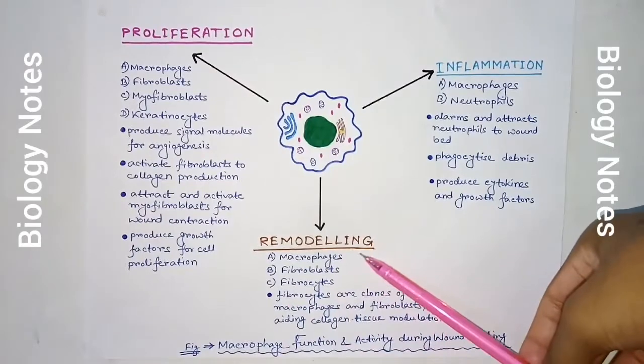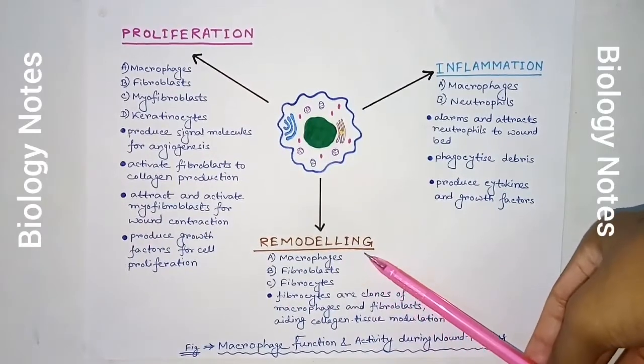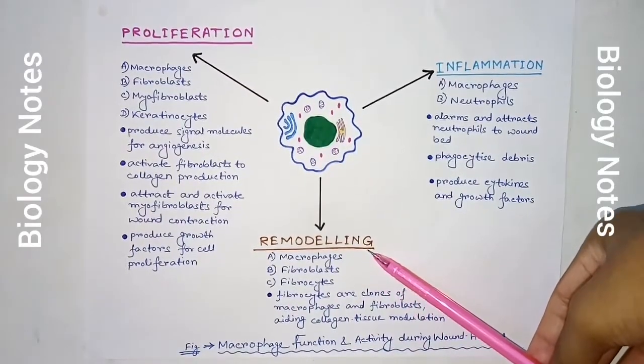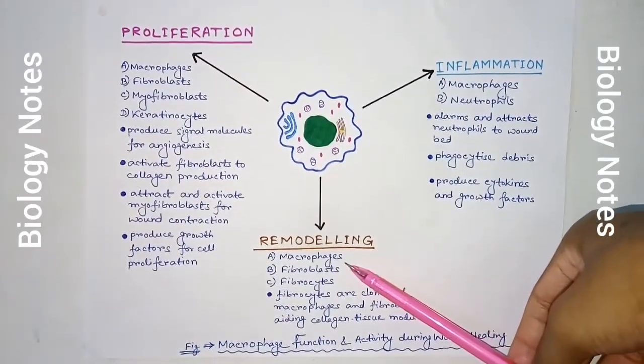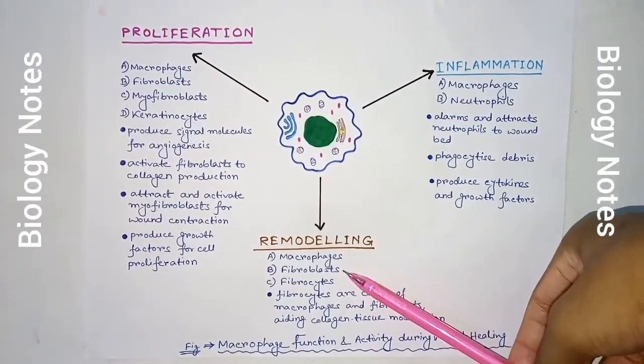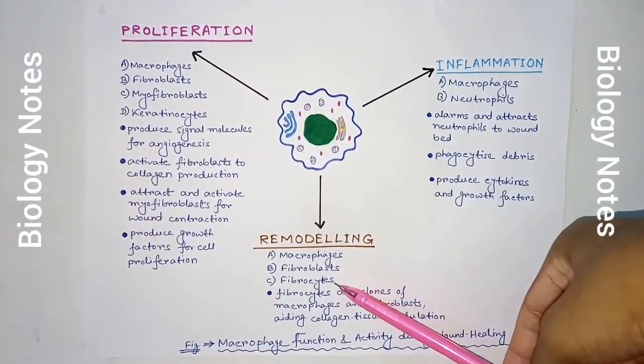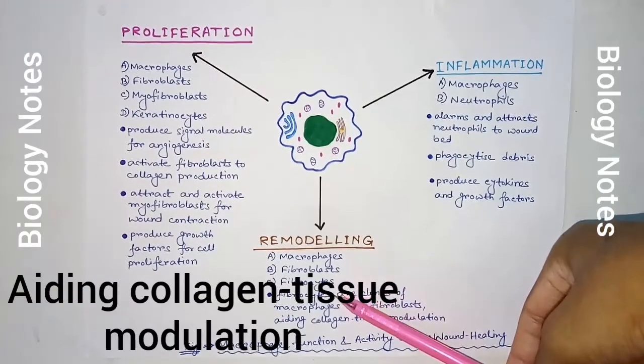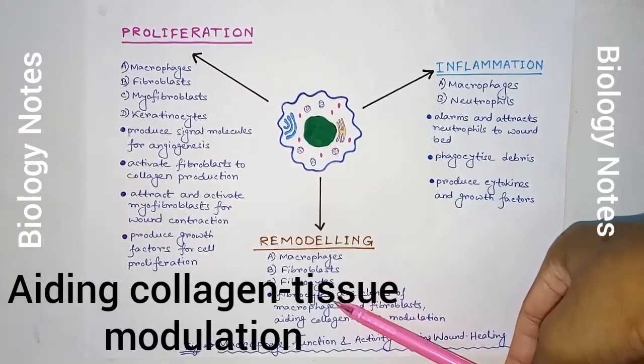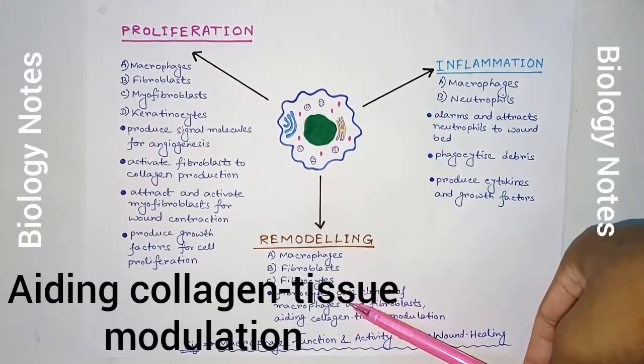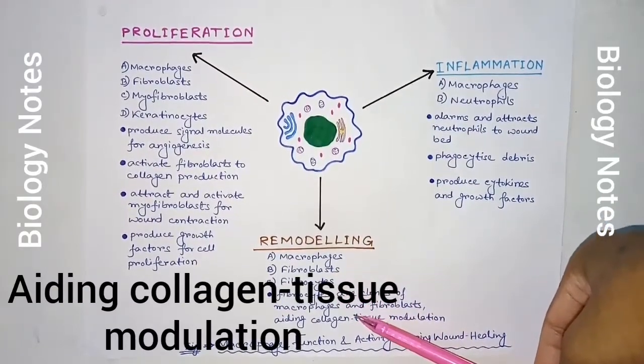During the maturation or remodeling stage, macrophages, fibroblasts, and fibrocytes help in adding collagen tissue modulation.